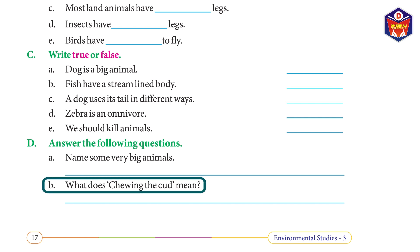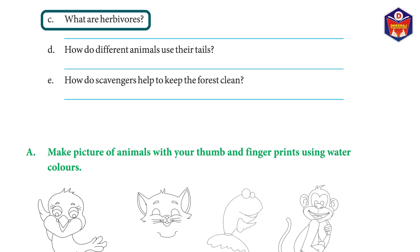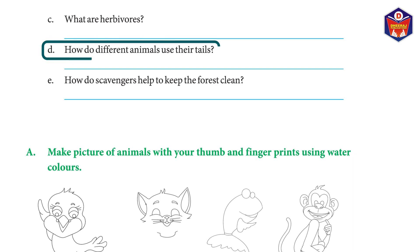What does chewing the cud mean? The animals swallow their food without chewing it; when they rest, they bring the food back into their mouth and chew it with their grinding teeth — this is called chewing the cud. What are herbivores? Animals like cows, horses, elephants, and goats eat plants and their products; they are called herbivores.